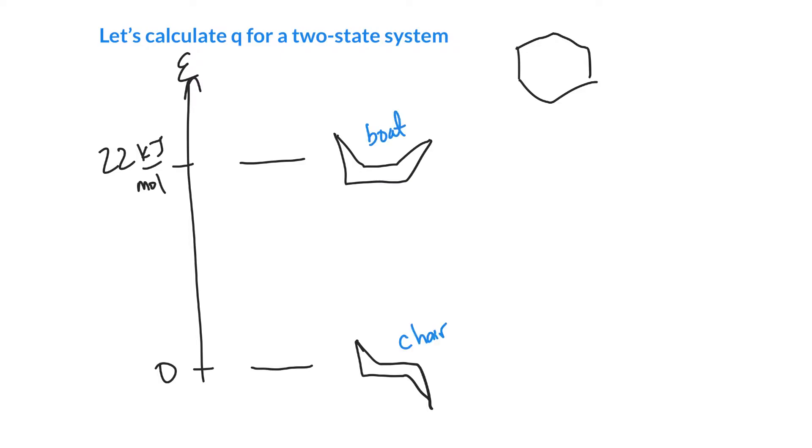And from this information, we can calculate the partition function. So we know that Q is the sum over all those states of E to the minus the energy of each state over KT. We know that the first state has an energy of zero, relatively speaking. So all we then need to do there is to calculate the energy of the second state, so that is E to the minus. And actually, remember, we can rewrite this as E1, capital E1 over RT, if we use on a molar basis.